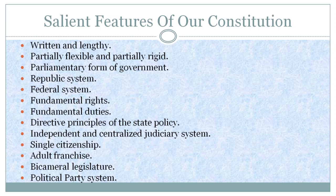Parliamentary form of government: Our constitution provides for a parliamentary form of government. The sovereign power of the nation is vested in the elected parliament. The executive is responsible to the legislature at the central and state levels. The cabinet shall be in power as long as it enjoys the confidence of the legislature. As soon as it loses the confidence of the legislature, it has to resign.